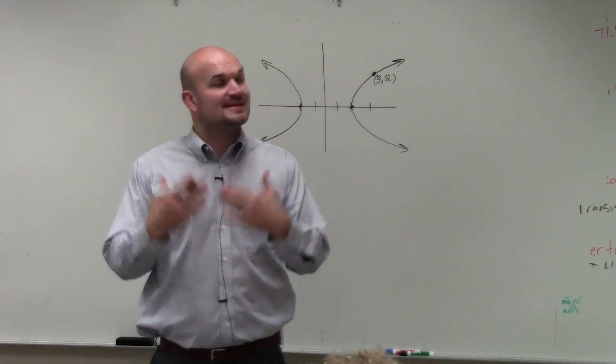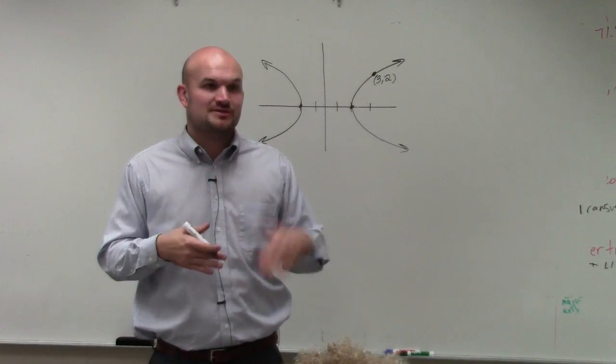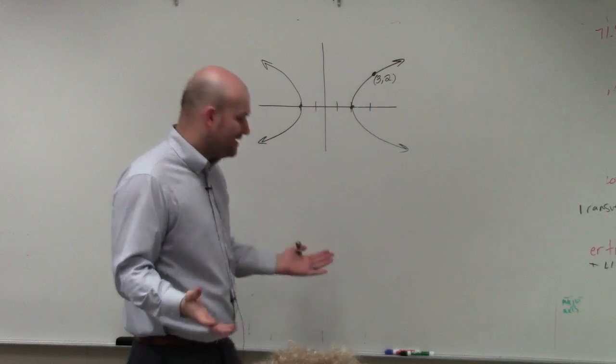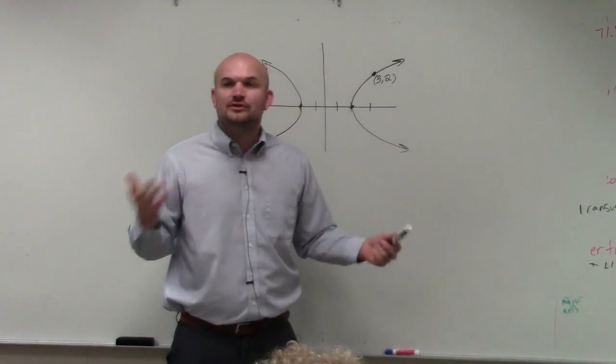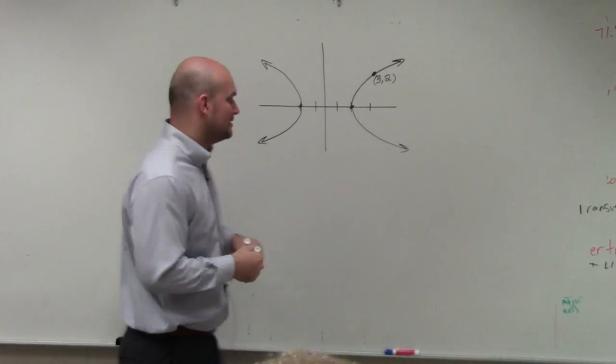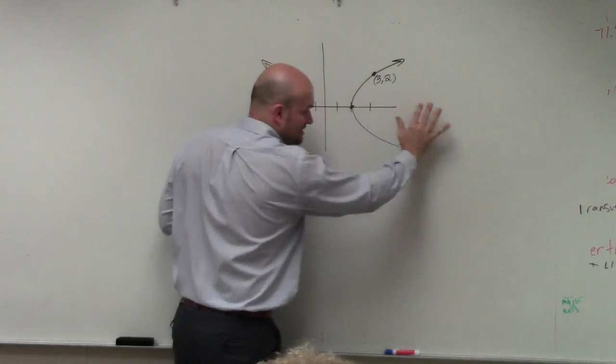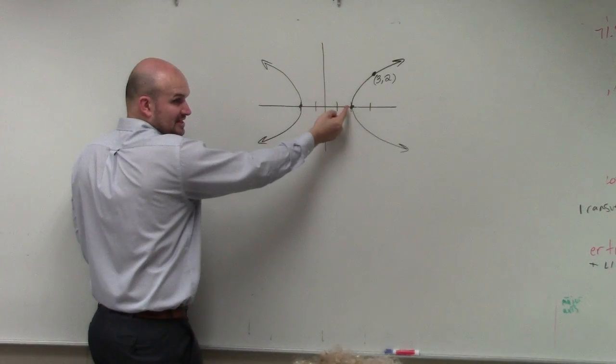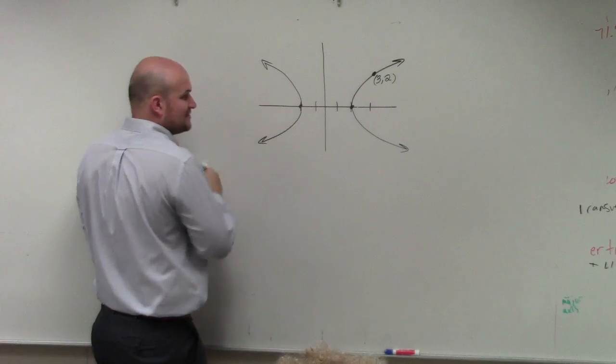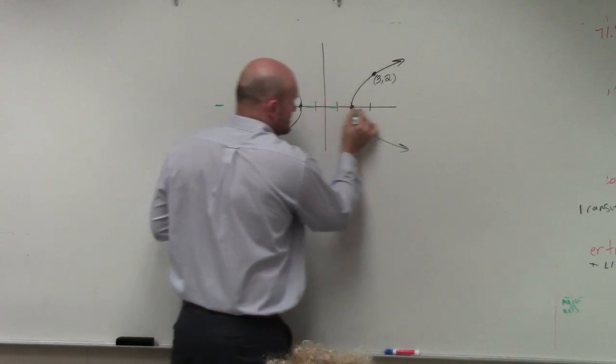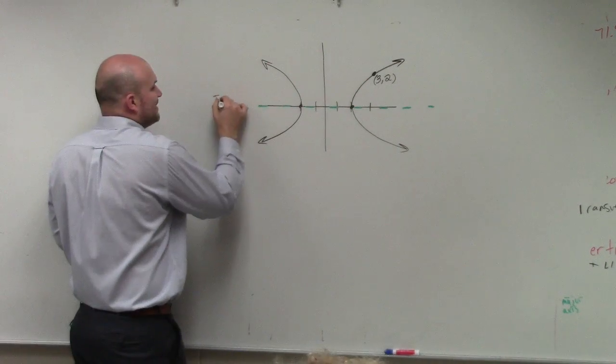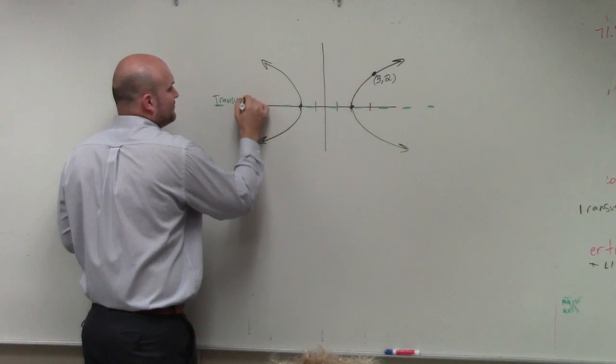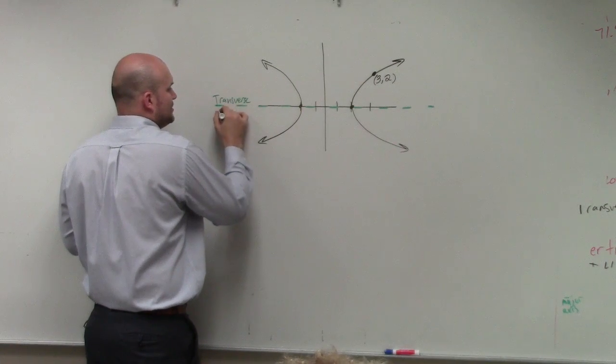Step number two, though, which you guys want to do, is identify if the transverse axis is horizontal or vertical. And again, guys, while you're learning this stuff, why don't you just go to the extra step and just label it? All right? You guys can hopefully obviously see that here are my two vertices, right? So my transverse axis is horizontal. So that's very important because that's going to tell us what formula we're going to use.